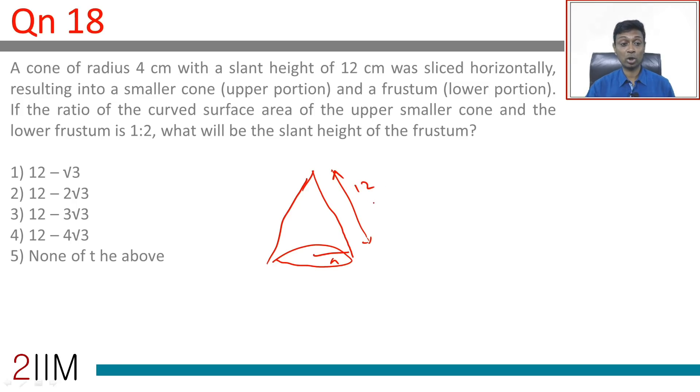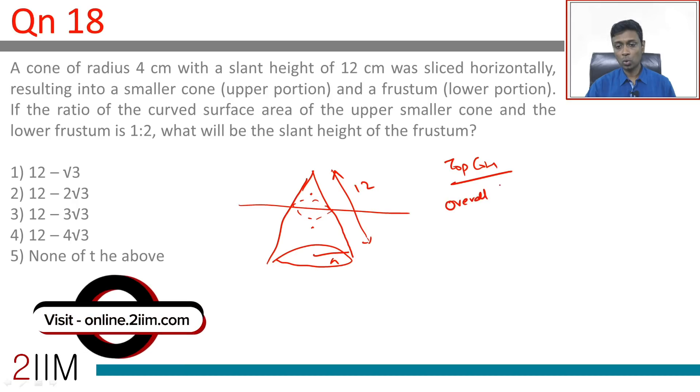We're cutting it somewhere here. The ratio of this to this is 1:2, but we're talking about only curved surface area. I'm going to flip this and say the area of the top cone to the overall cone is 1:3.